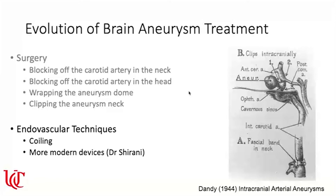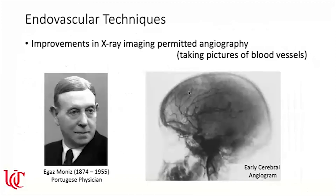Over time, endovascular techniques emerged, enabled by improvements in x-ray imaging that allowed for angiography — taking pictures of the blood vessels. Igaz Moniz, a Portuguese physician, actually won the Nobel Prize for some of this work. In the early angiograms, the x-ray of the skull and contrast dye in the vessels were superimposed. Now computers can subtract the skull image, leaving only the black blood vessels on a white background, making anatomy much easier to see.